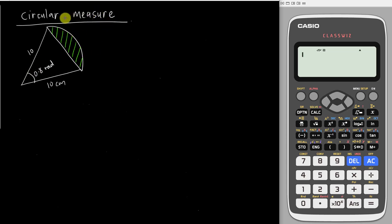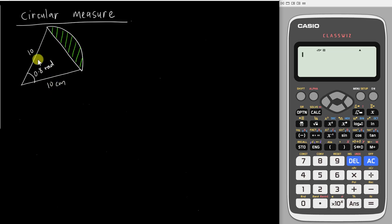So normally in circular measure, you will see a sector, and for this sector, normally you will have the radius and at the same time you will have the angle as well.